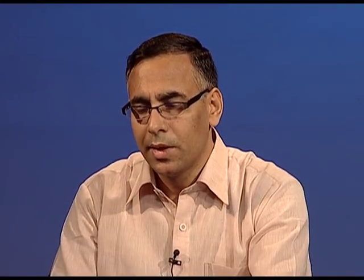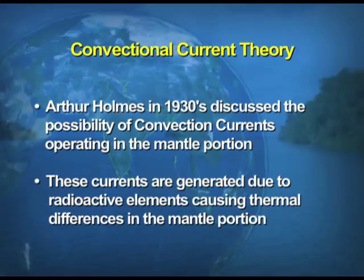A number of new studies came after Wegener put forth his theory. One of the most convincing was the convection current theory put forth by Arthur Holmes in 1930. It discussed the possibility of convection currents operating in the mantle portion of the earth as a force responsible for drifting of the continents. He said that these currents are generated due to radioactive elements causing thermal differences in the mantle, and argued that a system of such currents exists throughout the entire mantle.